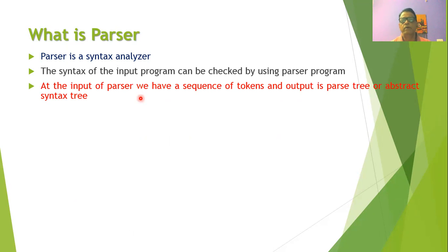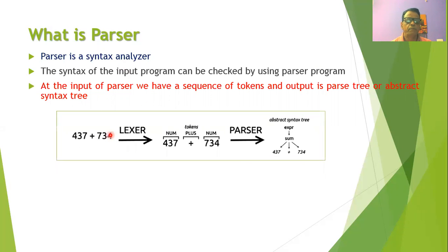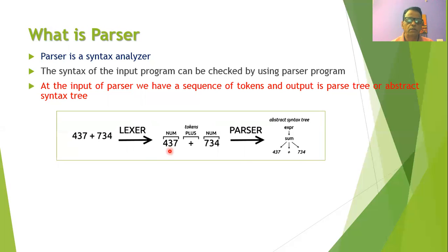At the input of the parser we have a sequence of tokens — that is, the output of the lexical analyzer is connected to the input of the syntax analyzer. At the output of the parser there will be a syntax tree called the abstract syntax tree. For example, if you write something like 437 plus 734, this input code is connected to the lexical analyzer called the lexer. At the output of the lexer, a token will be generated for the number 437, for the operator plus, and for the number 734.